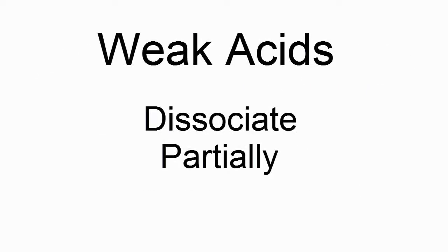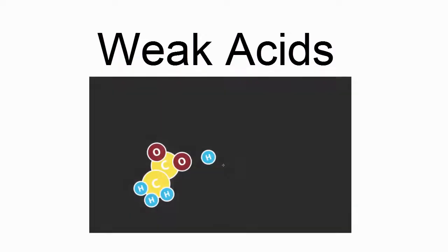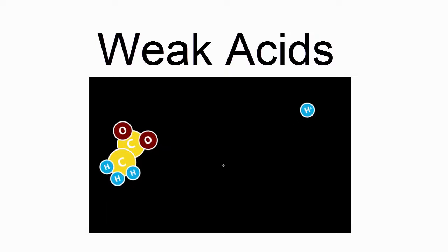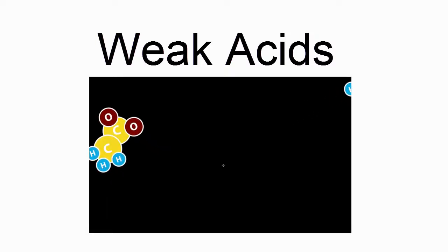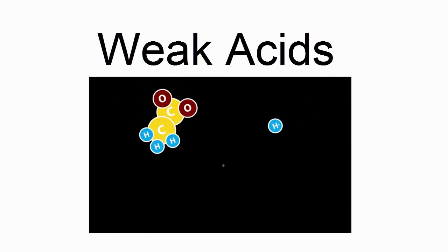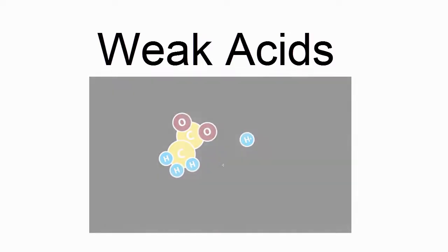For weak acids, only some of the hydrogen atoms dissociate to form the H plus ions. Most of them will stay bonded to the acid molecule. Here you can see for this weak acid molecule, acetic acid, the hydrogen ion is only dissociated part of the time. In a larger sample, with more molecules, only some of the atoms would be dissociated at any given time.